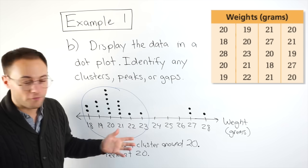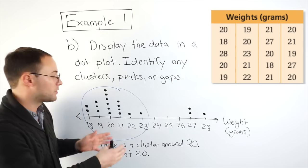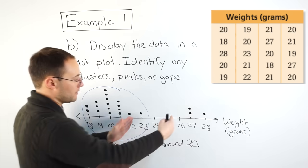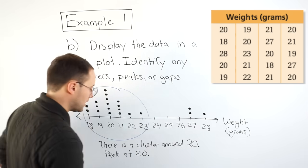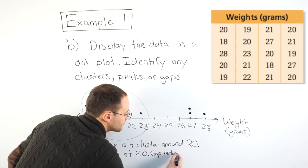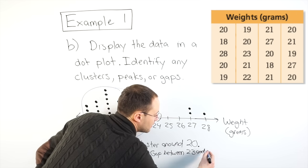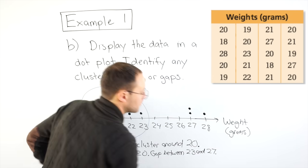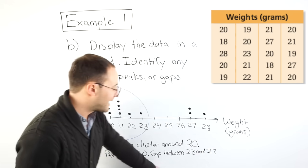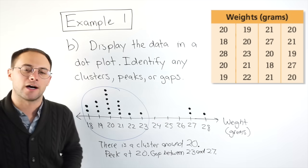And finally, gaps. Hopefully that's obvious. What that is, where there's spaces in between the data values. And that obviously is right here. So there is a gap between 23 and 27. So that's just kind of helping to explain our data a little bit more.